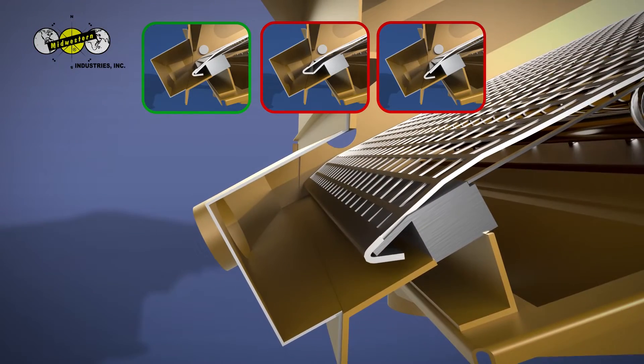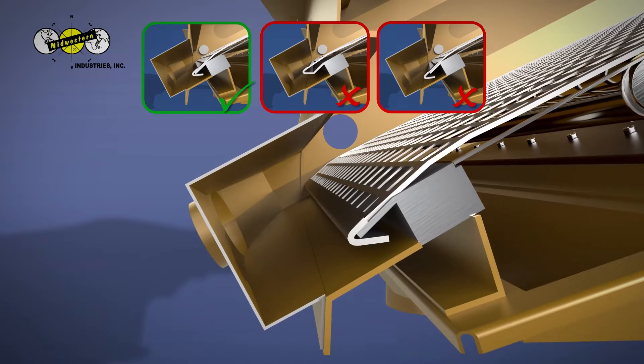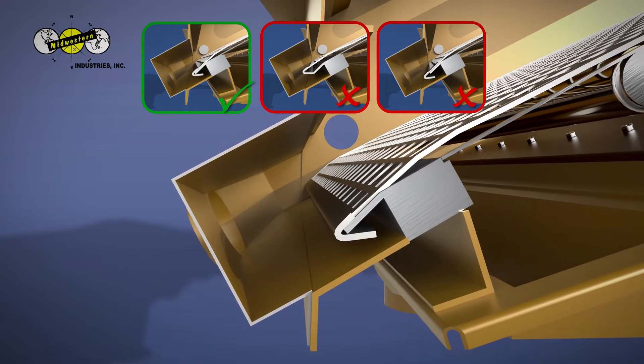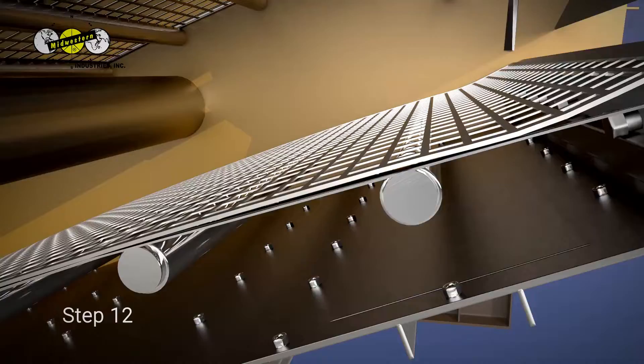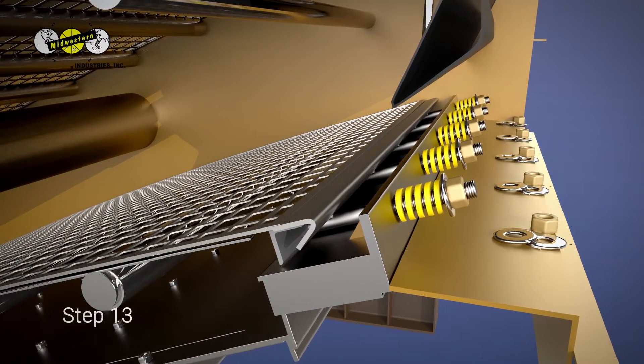Step 11: Secure the new screen to the fixed tension lip at the discharge end of the screener. Step 12: Secure the drawbar into the hook.